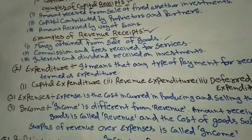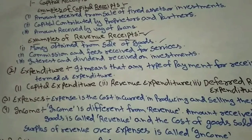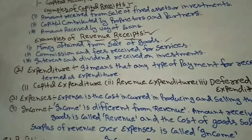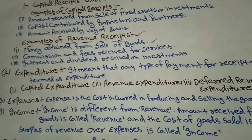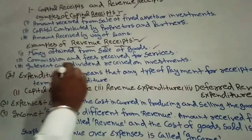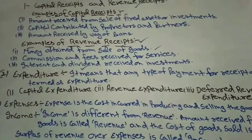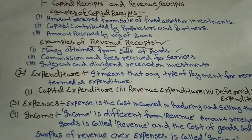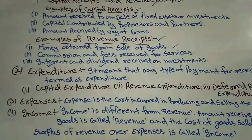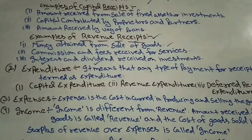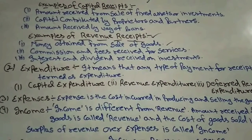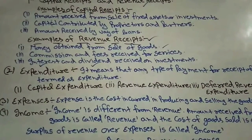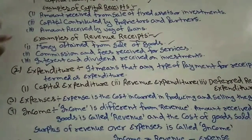The next point is interest and dividend received on investment. If we have invested some amount and on the basis of that we are receiving interest or dividend — if we invested in shares we receive dividend, if we invested in debentures we receive interest — the income generated in this case is also called revenue receipts.